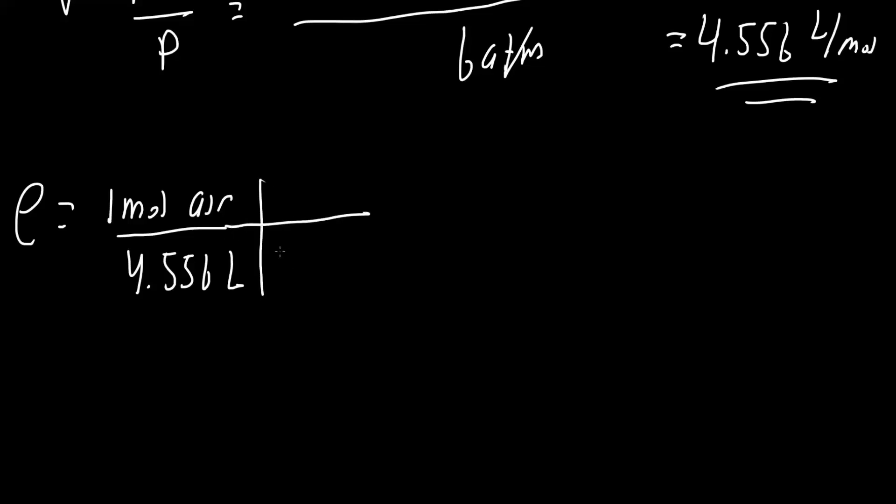We know that 1 mole of air is 29 grams of air, which is the molecular weight for air. And we know that 1,000 grams is 1 kilogram, and 1,000 liters equals 1 meter cubed.